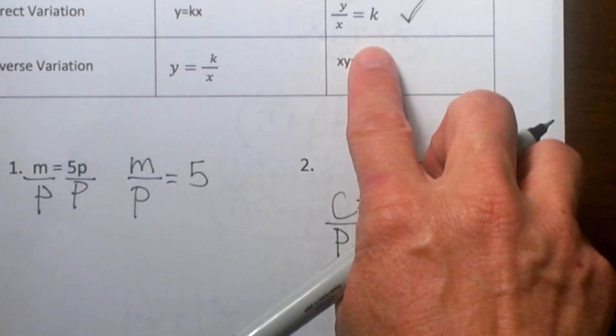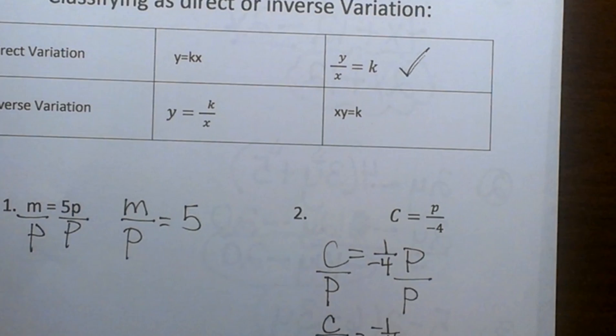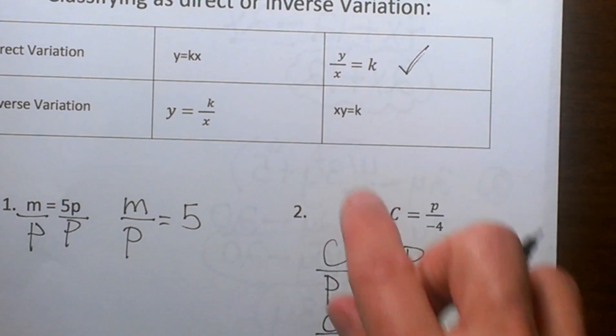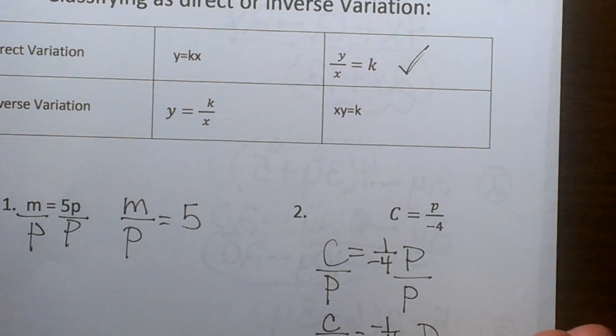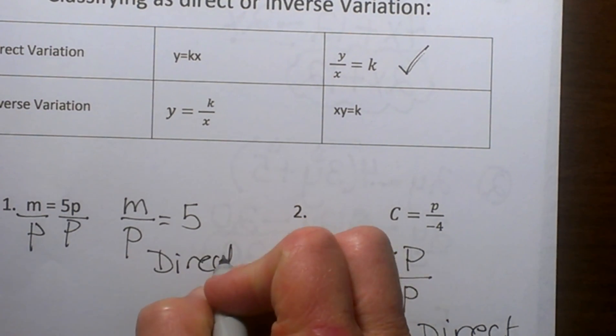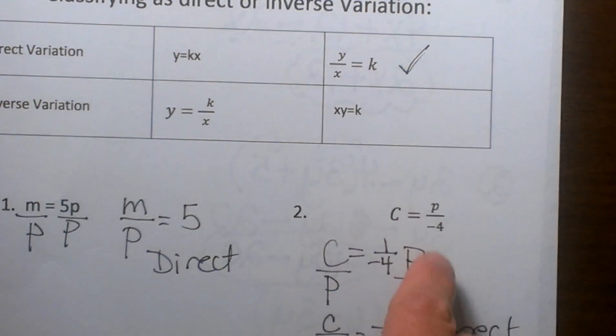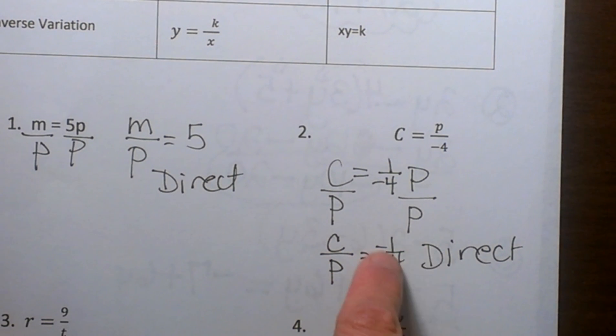So I can look at this chart. When I have the variables on the same side and they are being divided, this one is direct also. So don't let that one trick you. I'm going to mark this one as direct. Don't let it trick you with a constant in the denominator.